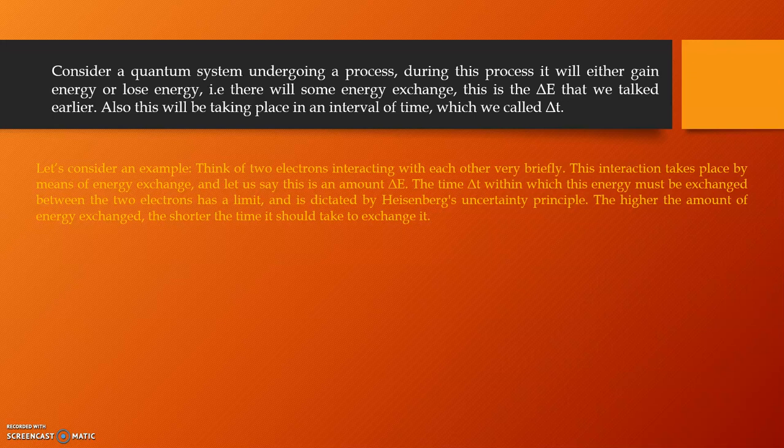Let's consider an example. Think of two electrons interacting with each other very briefly. This interaction takes place by means of energy exchange, and let us say this is an amount delta E. The time delta t in which this energy must be exchanged between the two electrons has a limit and is dictated by the Heisenberg's uncertainty principle. The higher the amount of energy exchanged, the shorter the time it should be to exchange it.